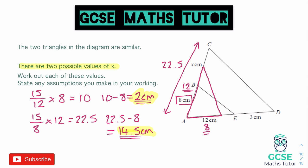Now, this question also threw in that line at the bottom, said state any assumptions that you make in your working. Now, these assumptions are just the assumptions that we normally use for similarity. So when we are looking at similar shapes, we assume that all of the angles are the same. So we will assume in this question that all of the angles within the triangles are the same.